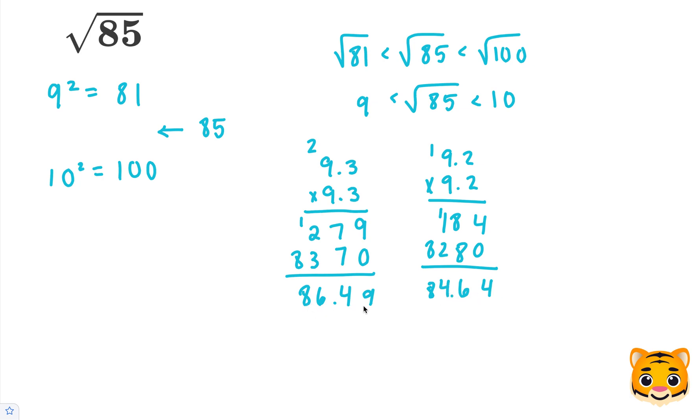Now 86.49 is 1.49 away from 85. 84.64 is 0.36 away, meaning that 9.2 times 9.2 or 9.2 squared is closer to 85 than 9.3 times 9.3 or 9.3 squared. So we can estimate the square root of 85 to be approximately 9.2.